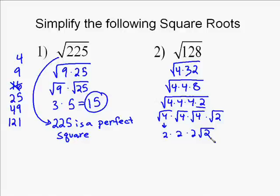And then we're left with the square root of 2 inside. And so 2 times 2 times 2 is 8. So you're left with 8 square root of 2. And that is your answer. 8 square root of 2 is the same as square root of 128.